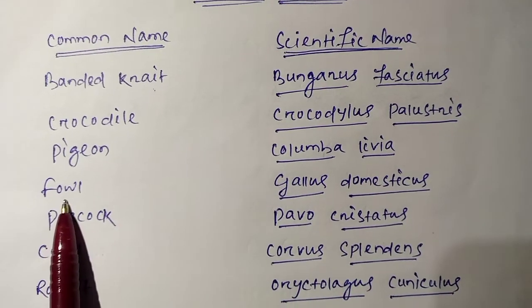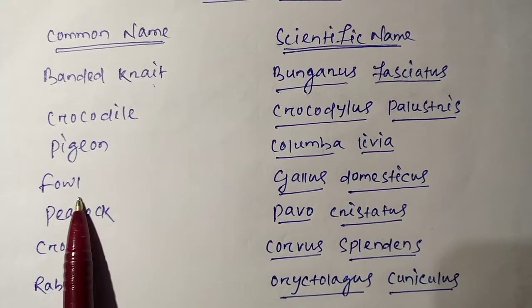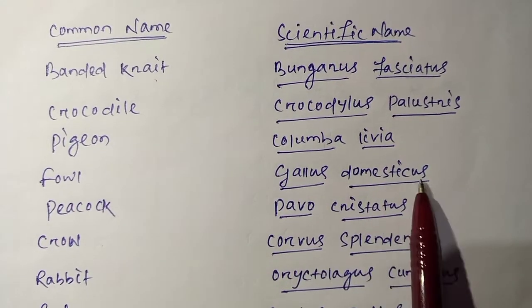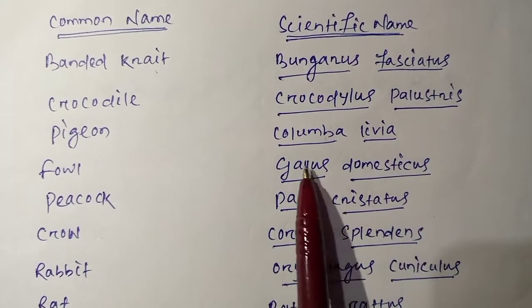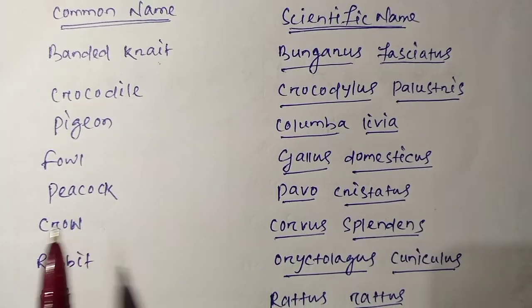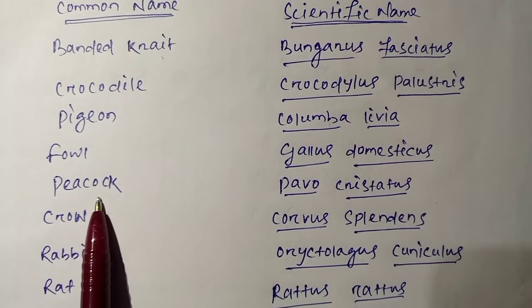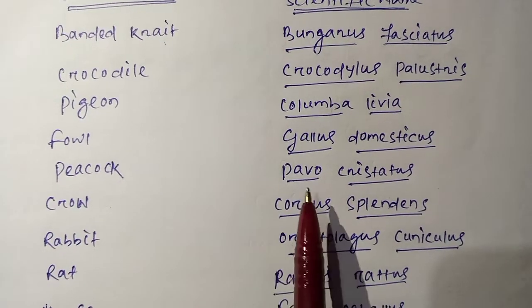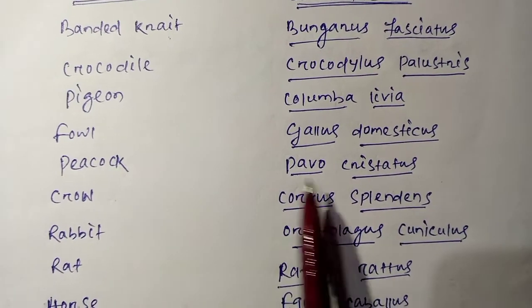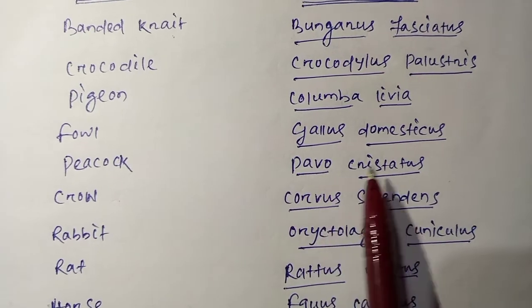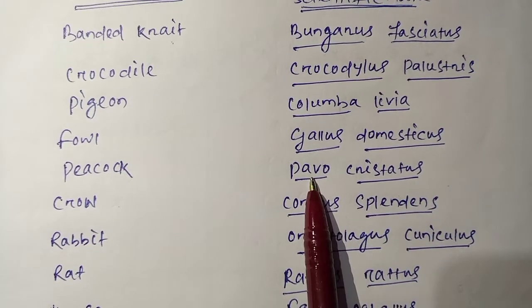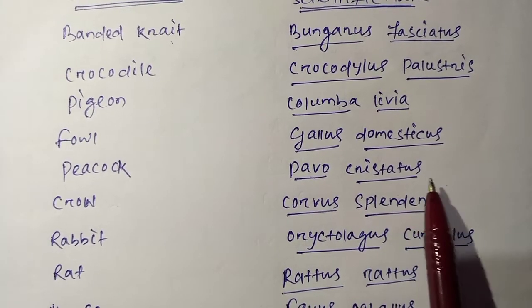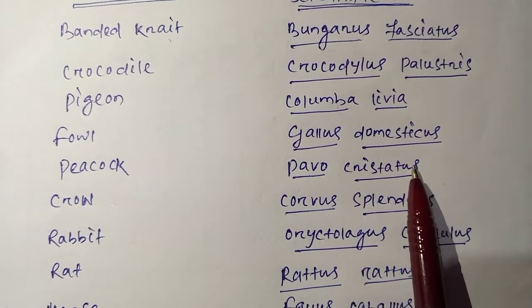Next is Fowl. The scientific name is Gallus domesticus, where Gallus is the genus name and domesticus is the species name. Next is Peacock. The zoological name of Peacock is Pavo cristatus, where Pavo is the genus name and cristatus is the species name.